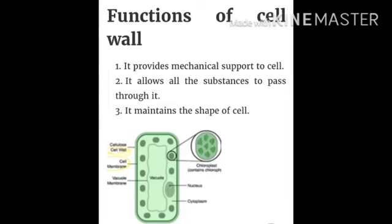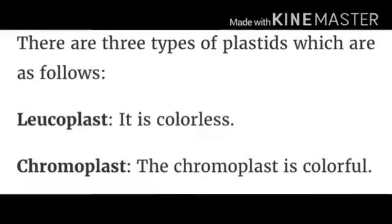The functions of the cell wall are: it provides mechanical support to the cell; it allows all substances to pass through it; and it maintains the shape of the cell. Everyone draw the plant cell in their classwork copy.